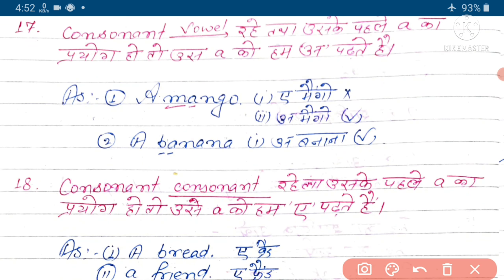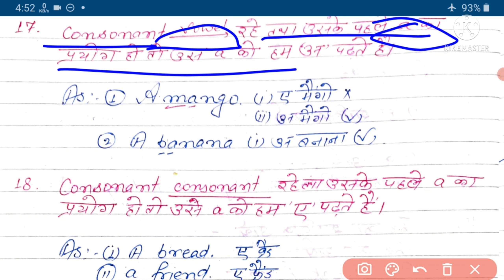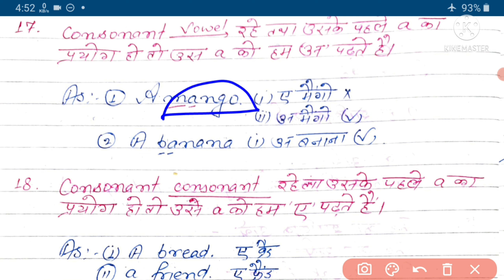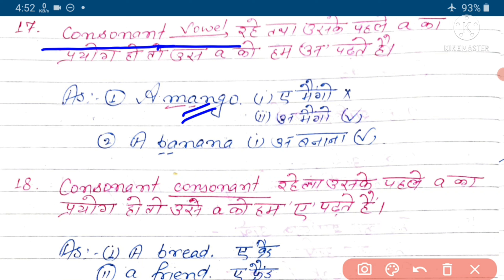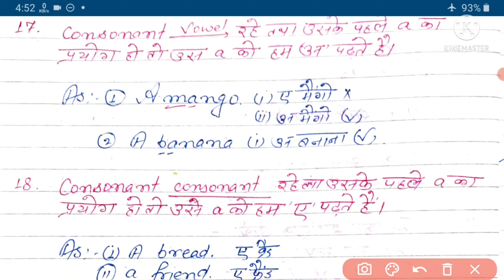Aage hai consonant. Agar kisi word mein consonant ke theek baad vowel rahe aur uske pahle 'a' ka prayog ho, toh hum log 'e' ko 'an' padhate hai. Jaisen 'mango' ek word hai aur iska starting hai 'M' - ye M se start hota hai. M humara consonant hai. A jo hai, vowel hai. Consonant ke baad vowel hai. Isi liye is word mein maujud 'a' ko hum log 'an' padhenge.